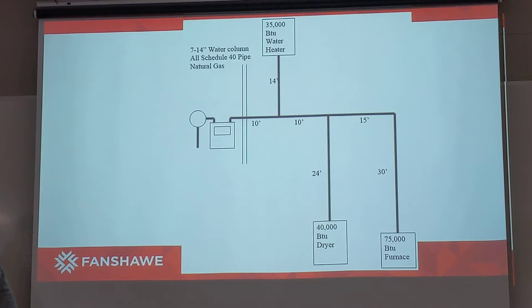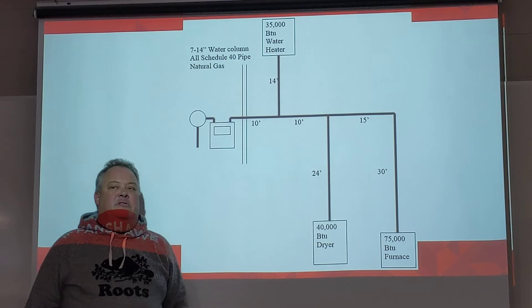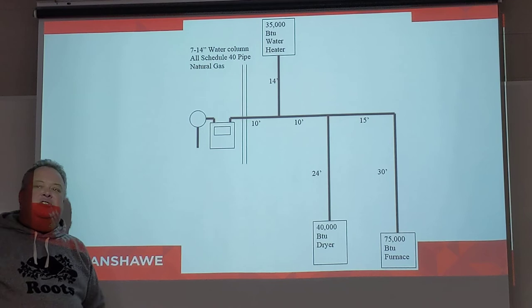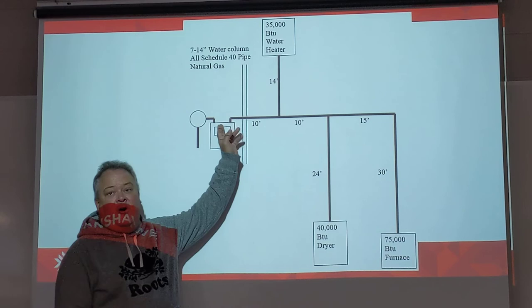Keep in mind, these are minimum pipe sizes. It's always good practice to put in a little larger. A lot of technicians, especially in older homes, always used to see that first pipe coming into the house as one-inch capacity. Because if a customer decides to add an appliance to the system, they now have the capacity to add that appliance without having to alter the gas piping all the way back to the gas meter.